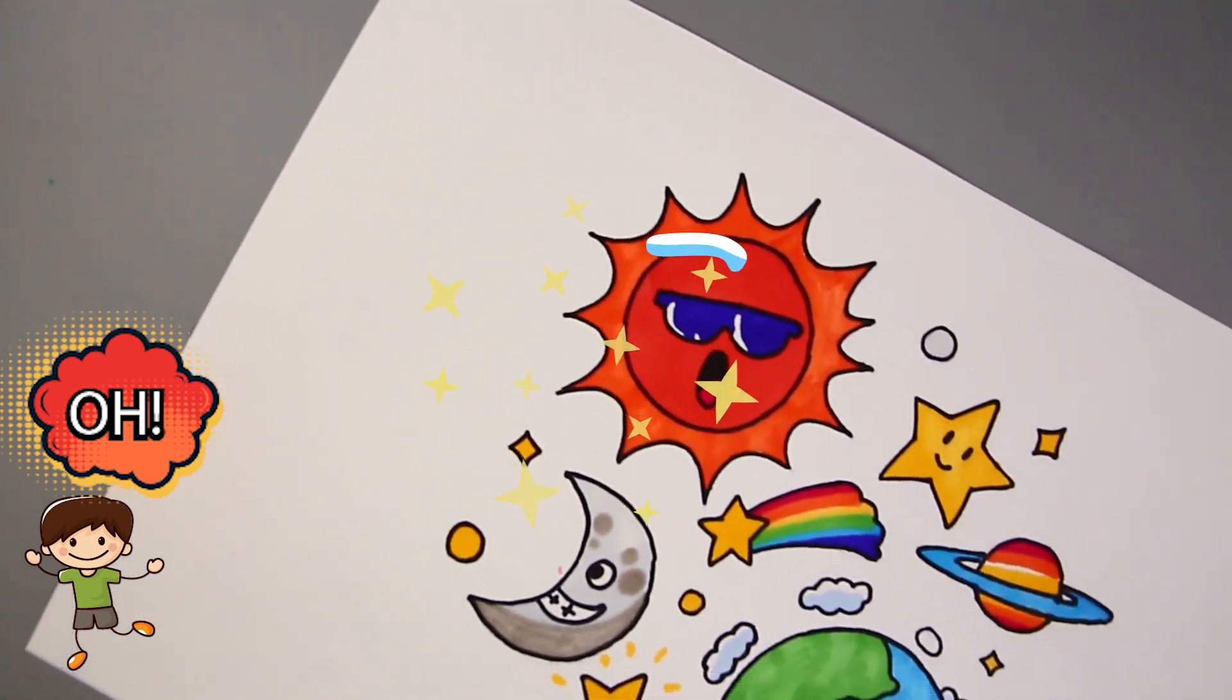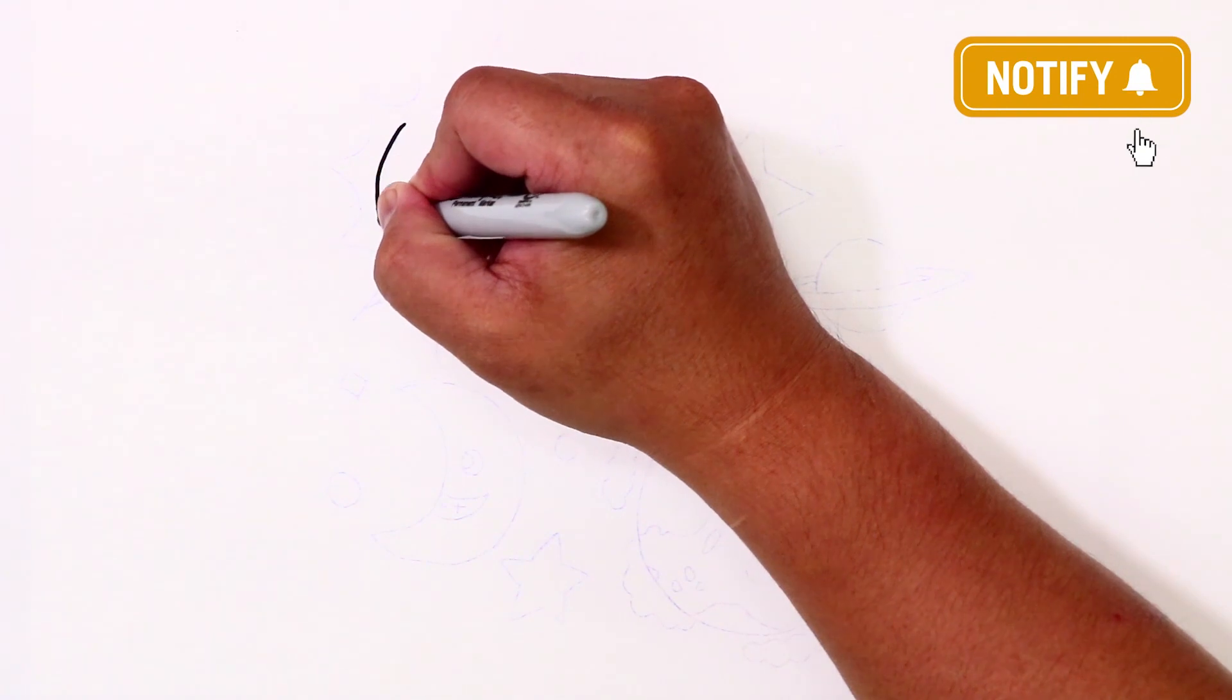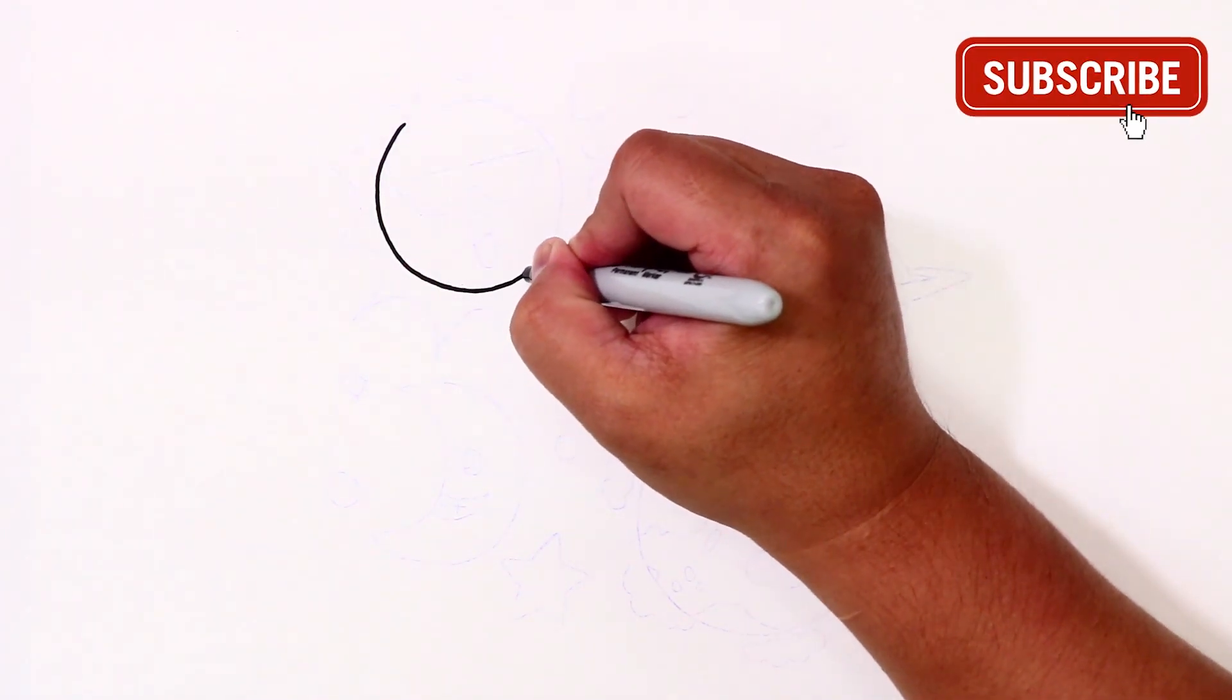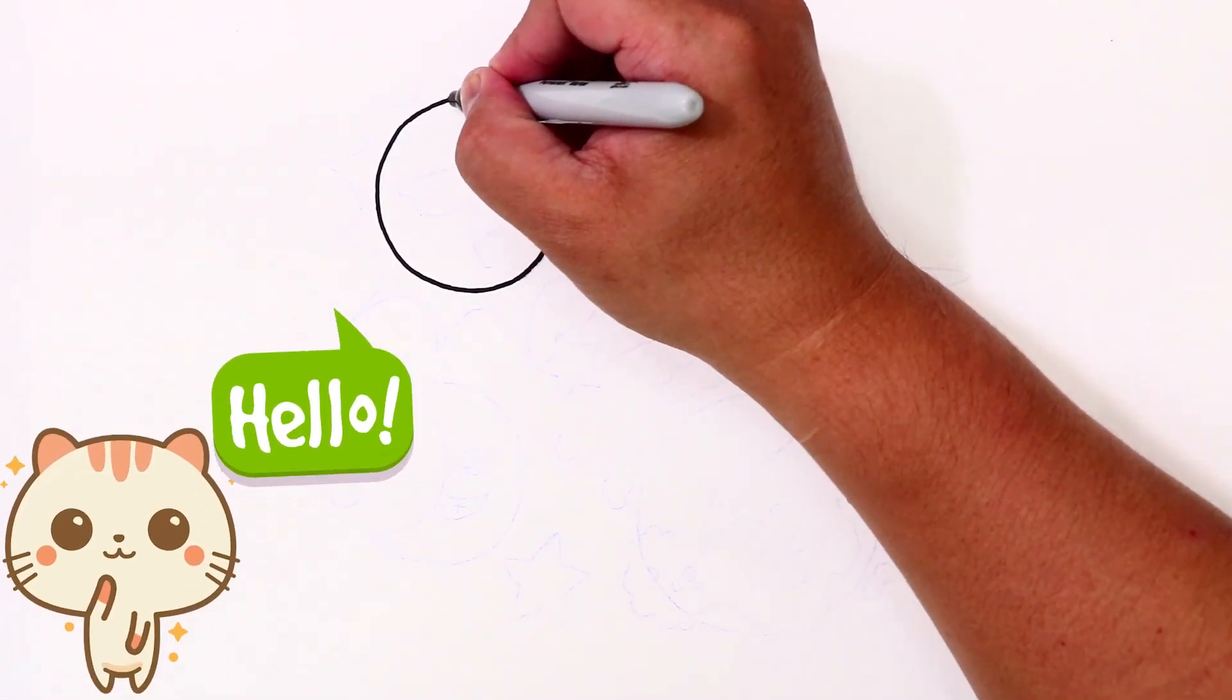So if you want to draw along with me, make sure you grab your pencils, markers, pens, coloring crayons, charcoal like we always say, whatever you have, it doesn't matter. And we will draw these awesome stars and planets together.